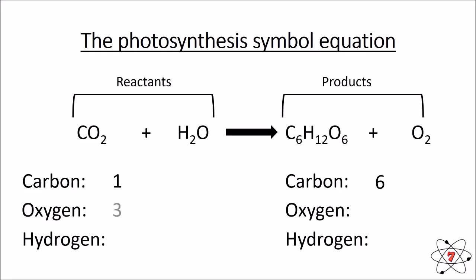On the reactant side we have one carbon; on the product side we have six carbons. On the reactant side we have three oxygens; on the product side we have eight oxygens. On the reactant side we have two hydrogens; on the product side we have twelve hydrogens — so nothing is balanced. I can only change the number of molecules of each compound, not the chemistry of the compound itself.